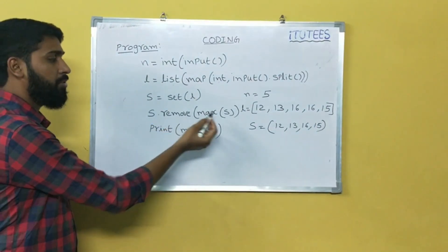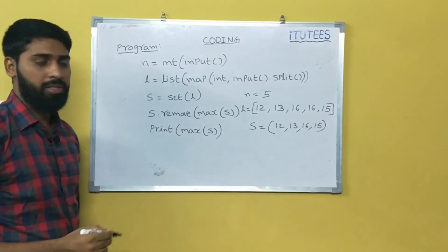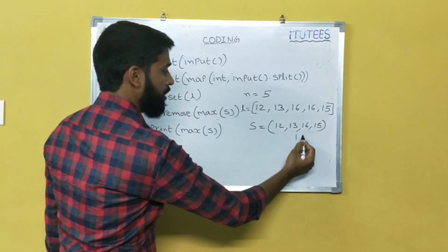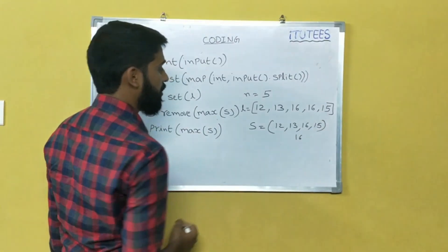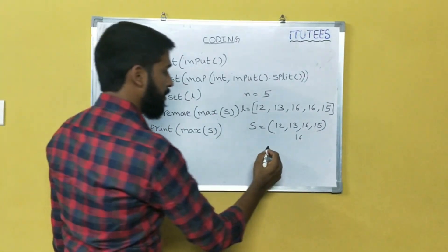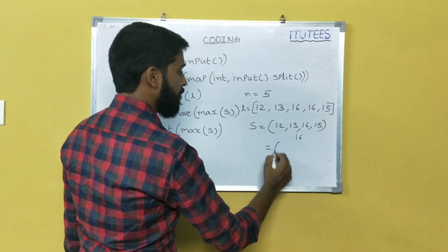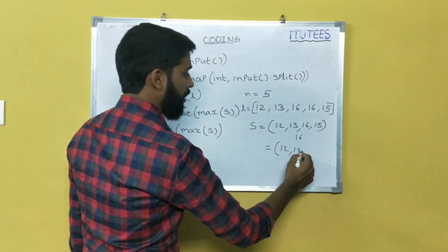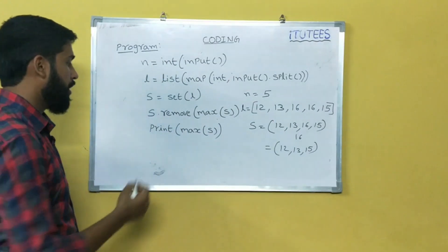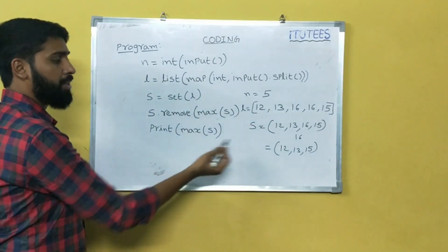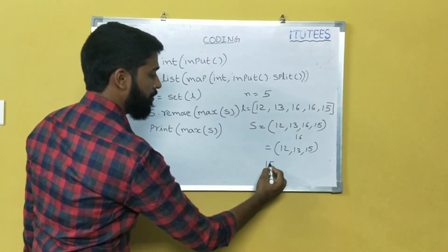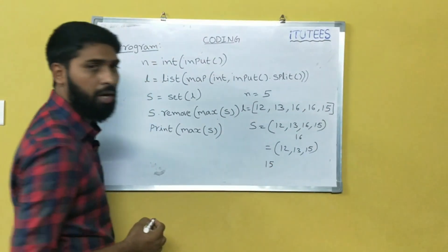S dot remove max of S — what is the max of S? Max of S is 16. Remove max of S, that means S becomes 12, 13, 15. Now print max of S — what is the max of S? 15. So 15 is the output.